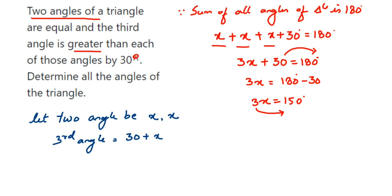So x will equal 150 divided by 3. When you cancel this in the 3 table, you will get 50. Therefore, we got x equals 50.